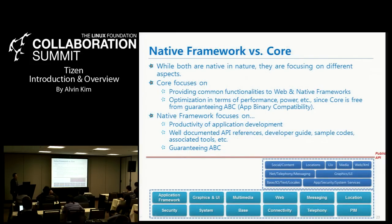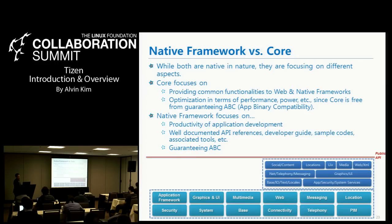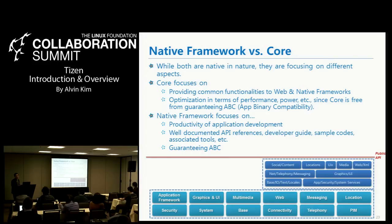I'd like to compare native framework with the underlying core. There are two layers on top of Linux: the underlying layer we call core, which is C-based, and the upper layers we call framework. Why provide two different native stacks? Because they focus on different aspects. Core focuses on providing common functionalities to upper layer frameworks and on optimization in terms of performance and power. Core is free from guaranteeing ABC — application binary compatibility — because it can freely optimize or even change the signature of each function.